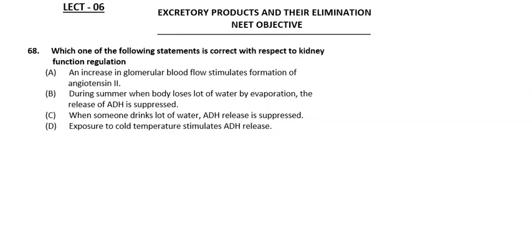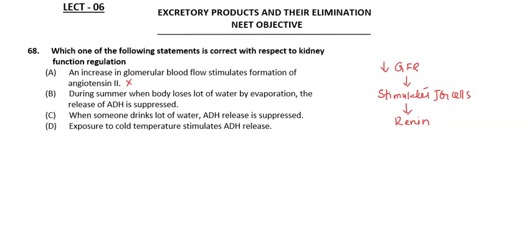Next question: which one of the following statements is correct with respect to kidney function regulation? Option A: an increase in glomerular blood flow stimulates the formation of angiotensin 2 — this is not correct, because it is a decrease in glomerular filtration rate that stimulates the JG cells to produce renin, which converts angiotensinogen to angiotensin 1.